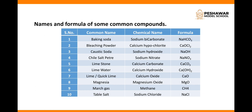There are certain formulas of common compounds. Number 1: baking soda — chemical name is sodium bicarbonate, formula is NaHCO3. Number 2: bleaching powder — chemical name is calcium hypochlorite, formula is CaOCl2. Number 3: caustic soda — chemical name is sodium hydroxide, formula is NaOH.